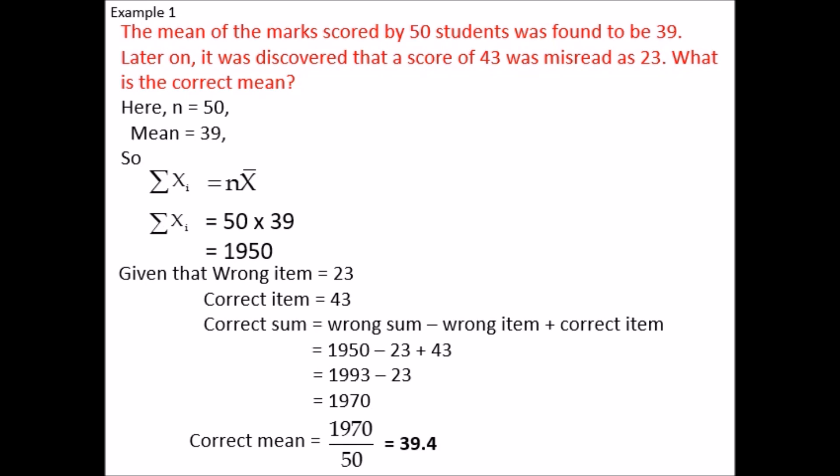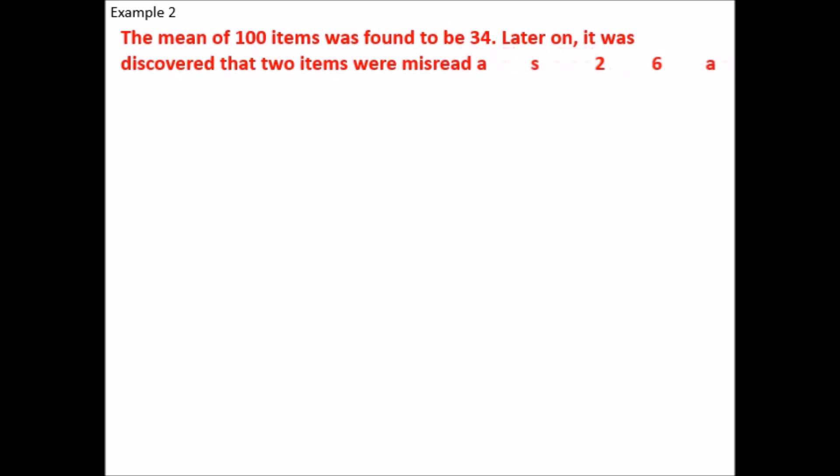I hope you understood. Example 2: The mean of 100 items was found to be 34. Later on, it was discovered that two items were misread as 26 and 19 instead of 36 and 90, respectively.